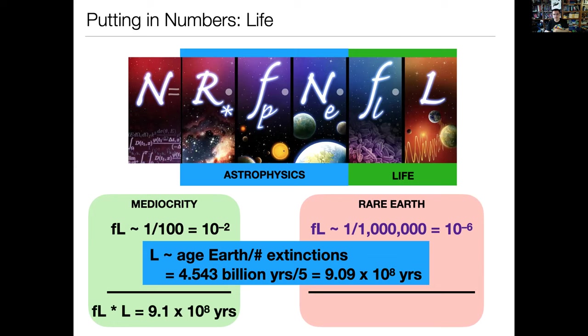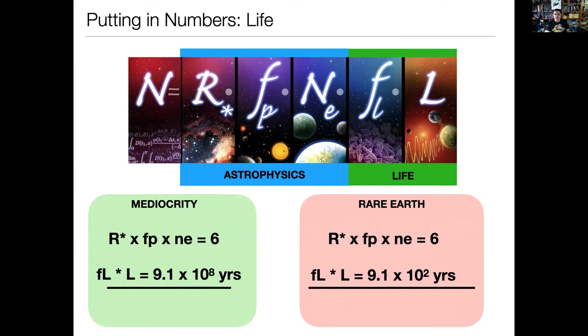Now I know everything I need to know to calculate just the life part for both these two cases. For the principle of mediocrity, if I take one per hundred, I multiply it by 910 million years, I get 9.1 times 10 to the 8. For the rare earth case, I get 9.1 times 10 to the 2. So now I have everything I need to calculate all the different pieces of the Drake equation. For people who believe in the principle of mediocrity, if I multiply 6 times 9.1 times 10 to the 8, I get that there are, in all likelihood, 5.5 billion worlds throughout the galaxy that harbor some form of life. If I'm a rare earth person, then I multiply this all together, I get that N is 550. In the 200 billion stars that fill the Milky Way, there are only 550 worlds that possibly harbor life. That's a big needle in a haystack problem.